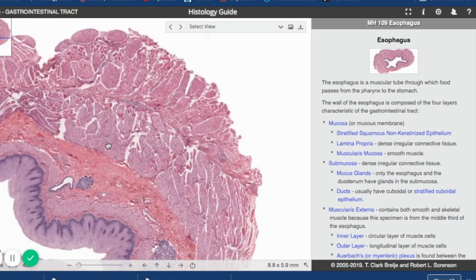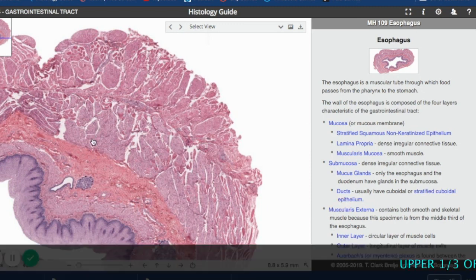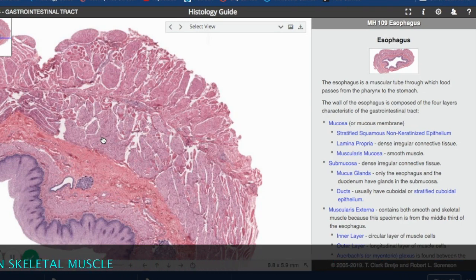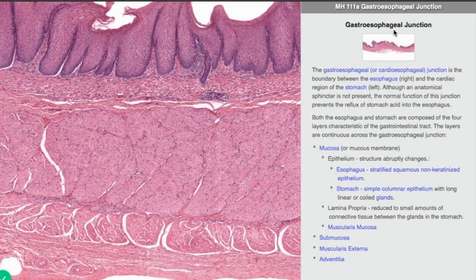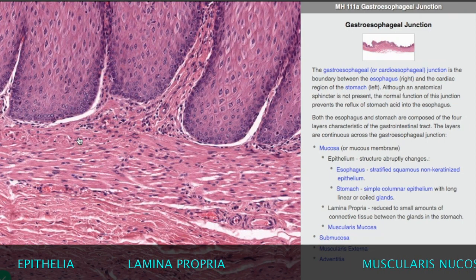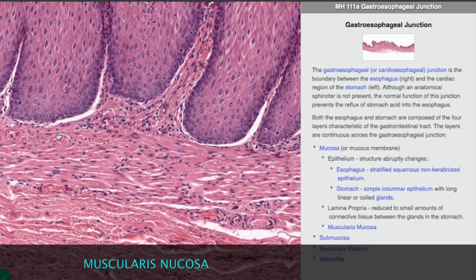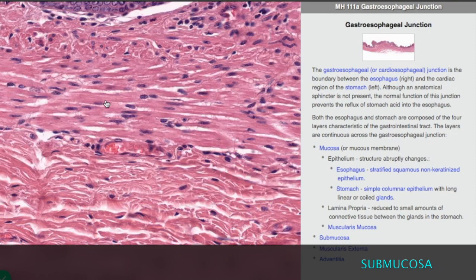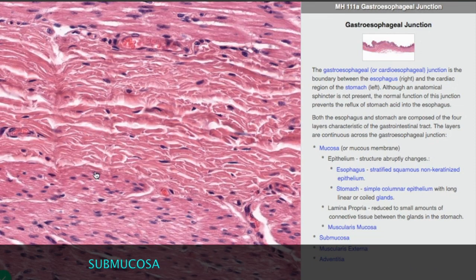Outside of the submucosa, you have the muscularis externa. In this sample it's a little messy and there's skeletal muscle fiber in it, so we're going to move to a more distal section near the gastroesophageal junction where the sections are a little cleaner. Again, let's take a look at those different layers. You have the epithelial layer and the lamina propria of the mucosa layer, as well as the muscularis mucosa. Superficial to that, we come into the submucosa, and here you want to look at the transition from that dense irregular connective tissue to the smooth muscle.